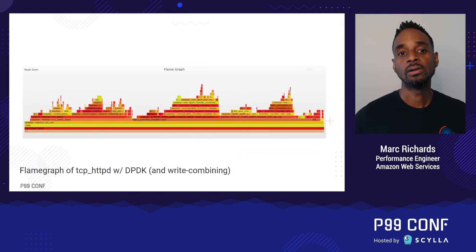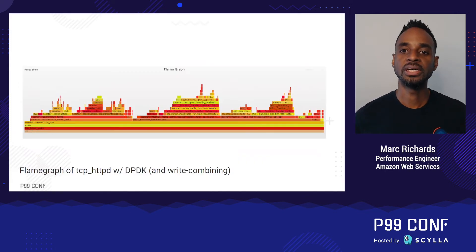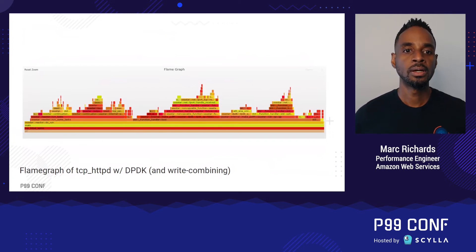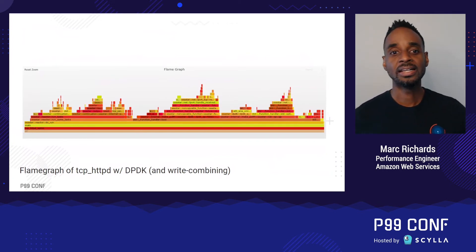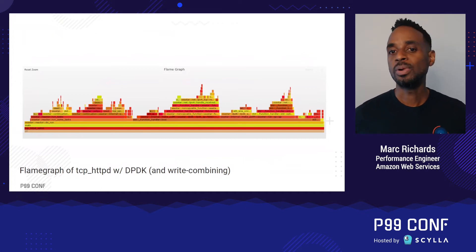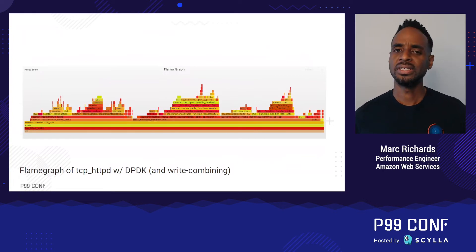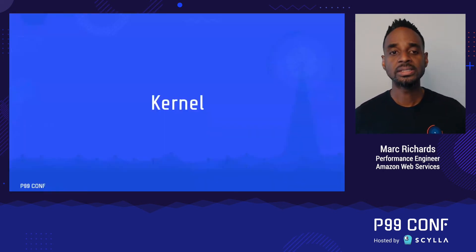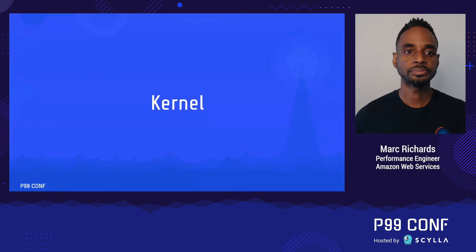Our flame graph now looks a lot more balanced, and the ENA transmit packet function has dropped from 53% of the flame graph to a mere 6%. DPDK has thrown down the gauntlet with 1.5 million requests per second on a four-CPU instance. The question is: can the kernel even get close?